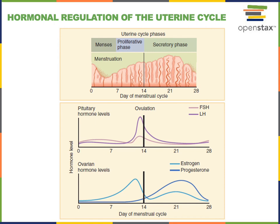After ovulation, progesterone levels rise and stimulate the secretory phase of the uterine cycle. Progesterone stimulates the uterine glands to produce secretions and maintains the stratum functionalis in preparation for implantation of an embryo. Progesterone also has a negative feedback effect decreasing luteinizing hormone levels; as LH falls, the corpus luteum degenerates into corpus albicans, causing progesterone levels to decline. The falling progesterone triggers menstruation — the shedding of the stratum functionalis of the endometrium.